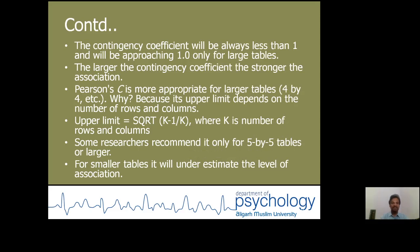The contingency coefficient will always be less than 1 and will approach 1 only for large tables. The larger the contingency coefficient, the stronger the association. Pearson's C is more appropriate for larger tables, such as 4 by 4, etc. Its upper limit depends on the number of rows and columns.